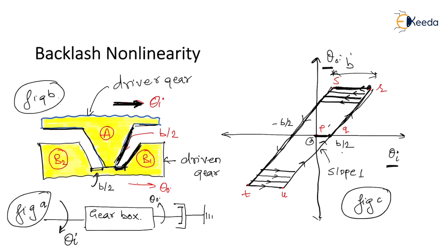Again, as the input motion is reversed, the driven gear again comes to a standstill position, shown by segment TU. It then follows the same path from U back to R (or Q), completing one full cycle.